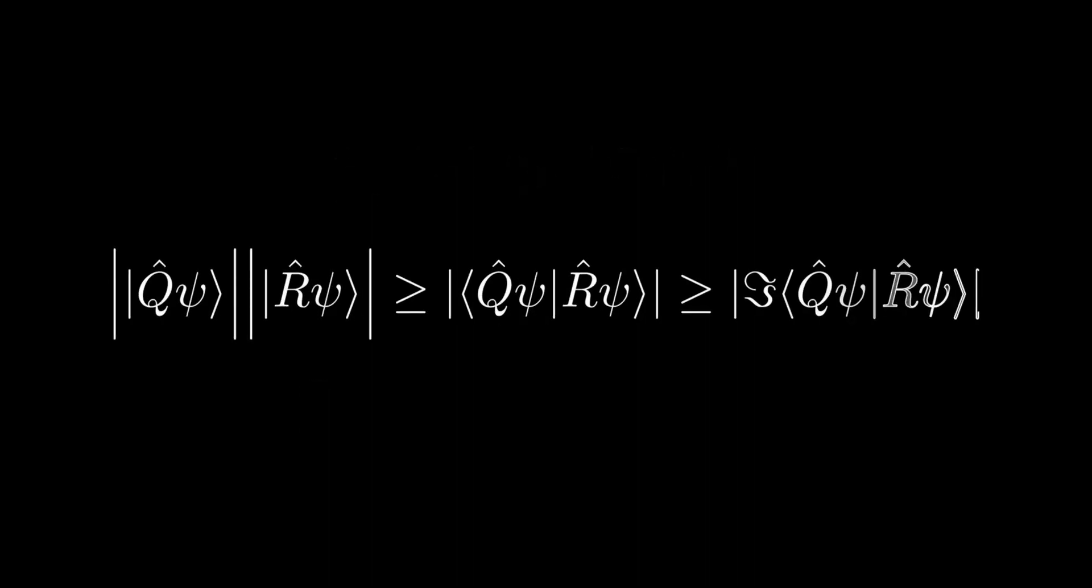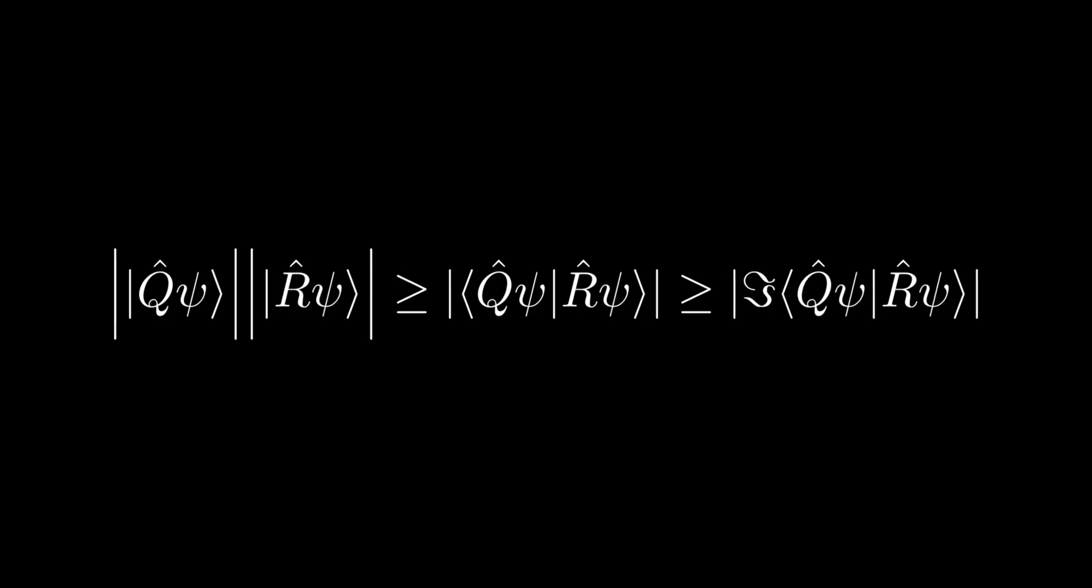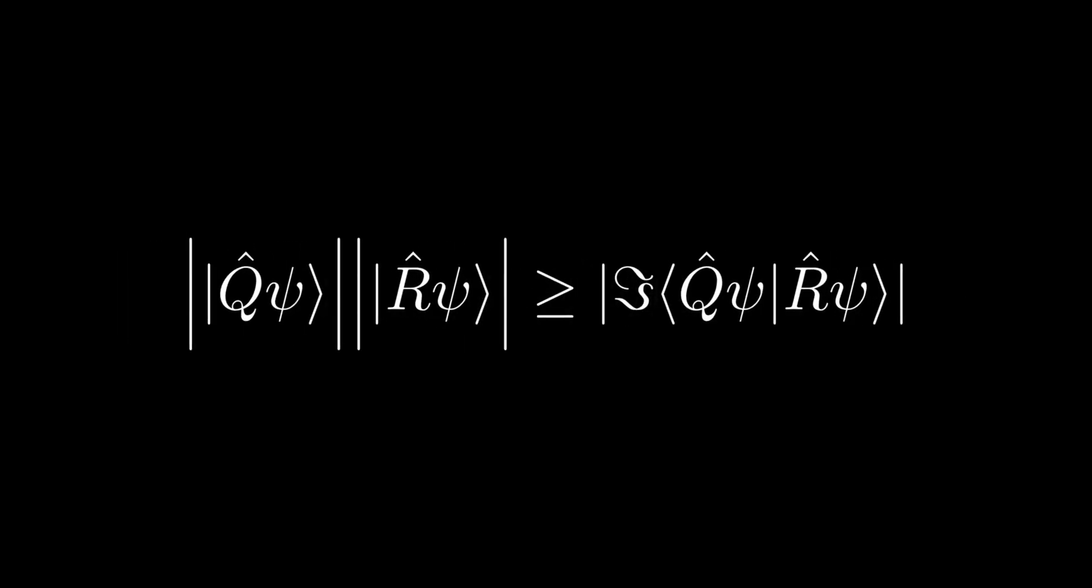Generalizing the inequalities for vectors to kets and combining the two inequalities give us the following result. We then use the results derived previously to substitute in the imaginary part of the inner product.